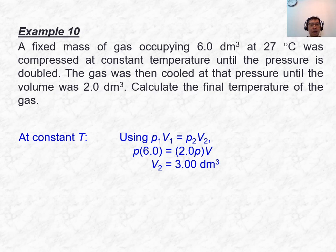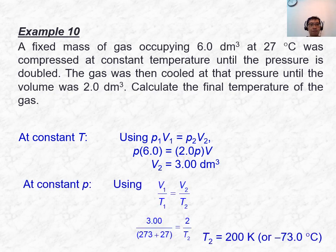For the second part of example 10, the gas is held at constant pressure, so apply Charles' Law using V₁/T₁ = V₂/T₂. Remember that temperature must be in Kelvin. The T₂ calculated will be 200 Kelvin.